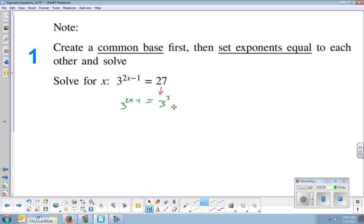And so now that you see that they're both a base of 3, a common base, once you have that common base, you don't need it anymore. Now you're just looking at your exponents. Well, if 3 to the 2x minus 1 equals 3 to the 3rd, then that must mean that 2x minus 1 equals 3. So once you have a common base, you simply set the exponents equal to each other. So my exponent of 2x minus 1 on the left is equal to my exponent of 3.